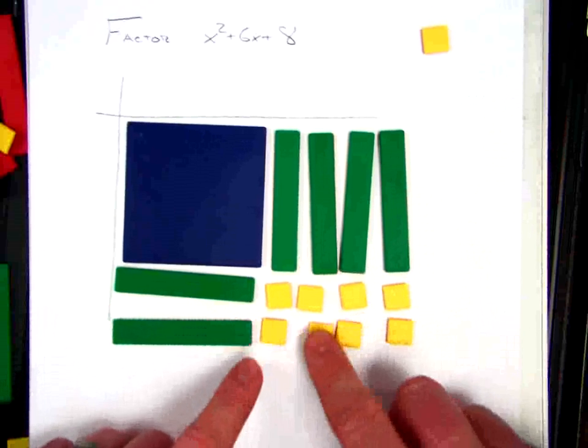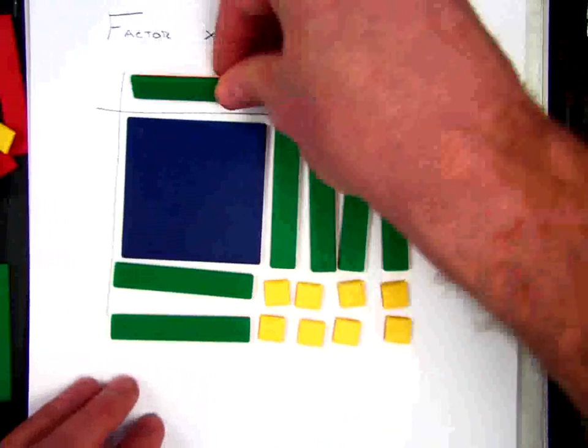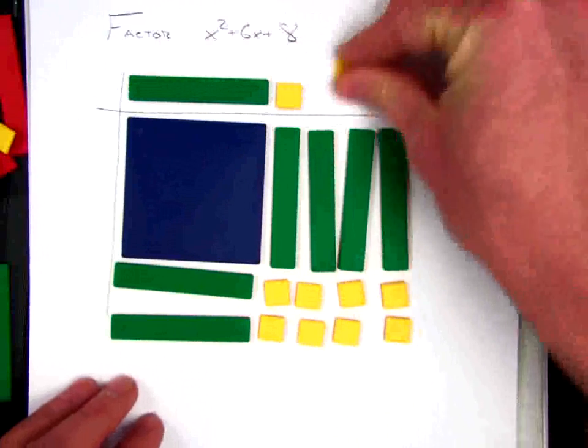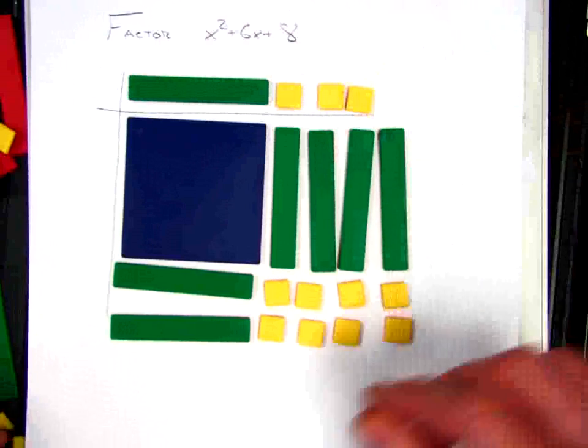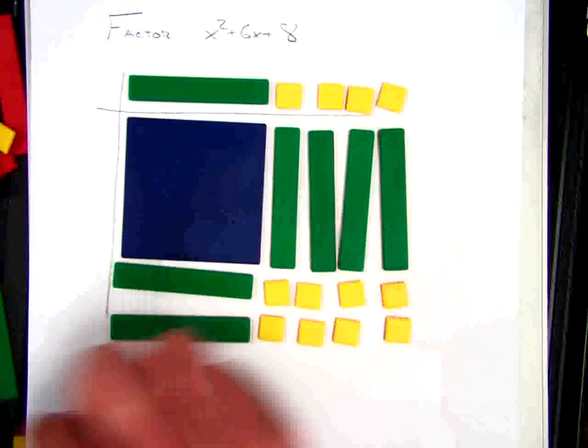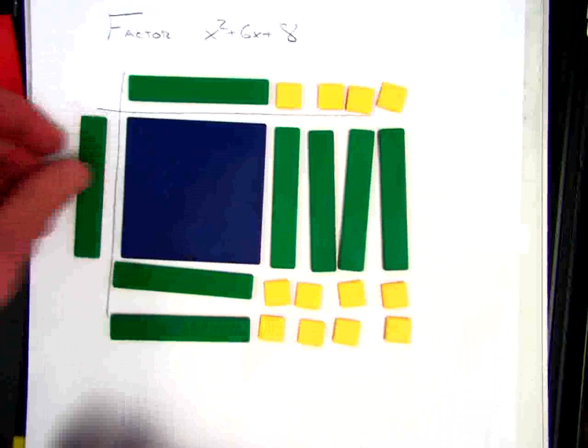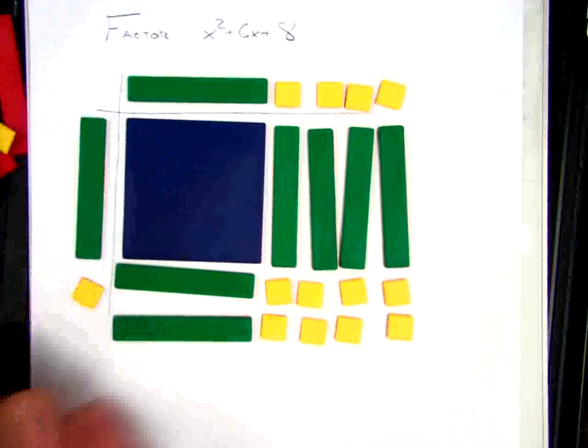And now I see that I can arrange my product in a way for the factors to be x plus 4 times x plus 2.